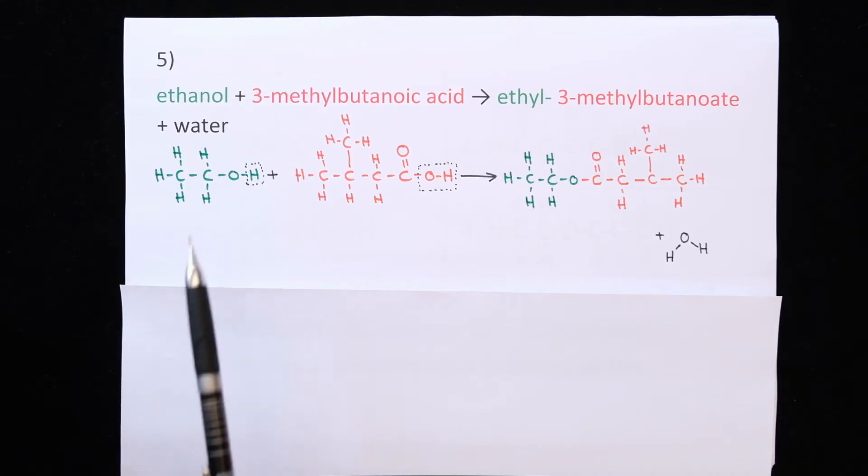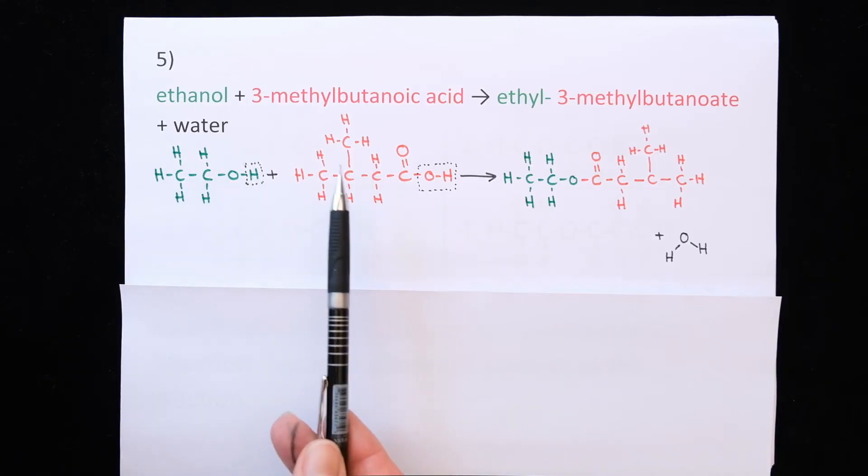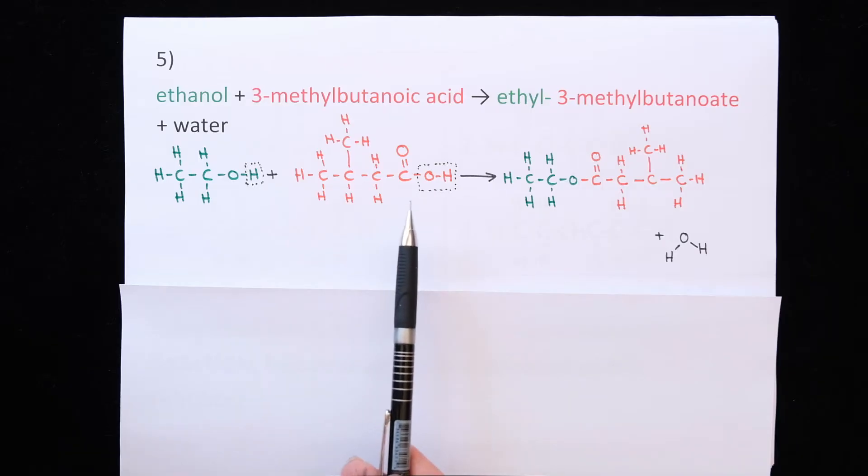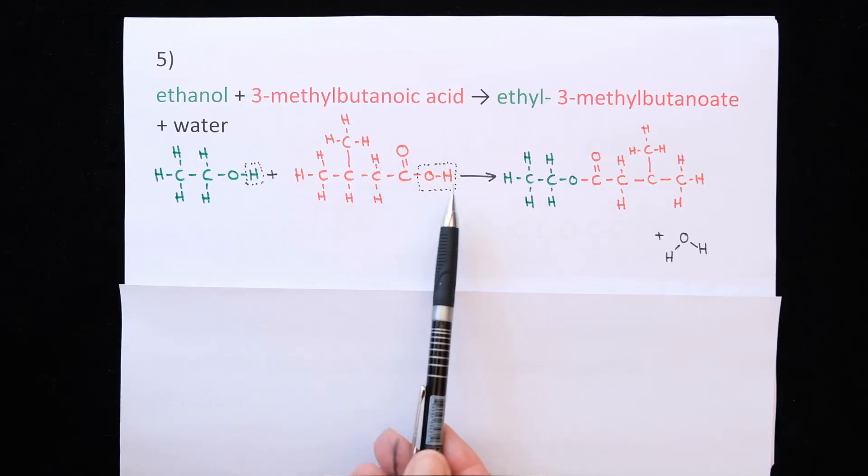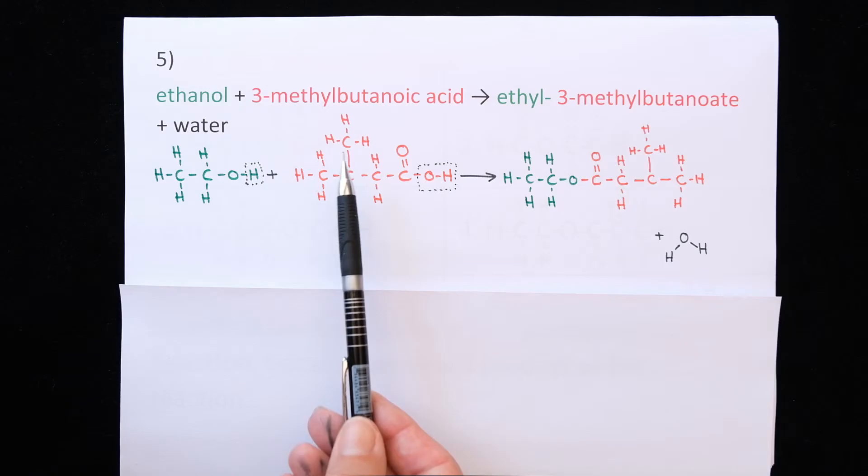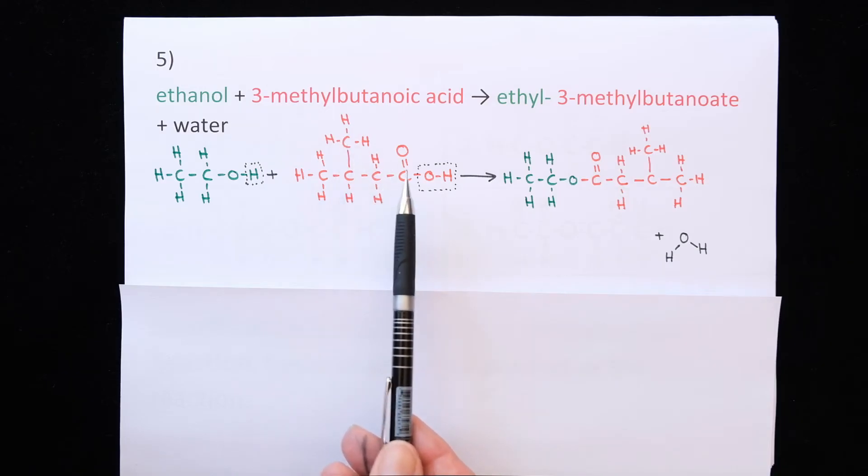Here is the answer. Ethanol, two carbons, with three-methylbutanoic acid. Now carboxylic acids have their functional group on the end, but this one has a methyl side chain. So we have to start numbering from the right hand side where our functional group is.